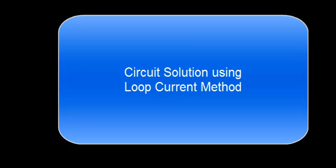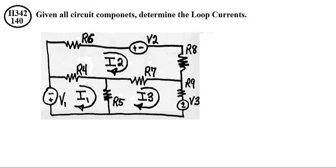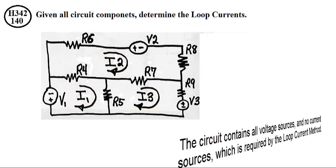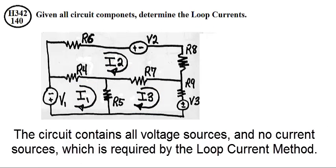Circuit solution using the loop current method. Given all these resistors and given these voltage sources, determine the loop currents. The circuit contains all voltage sources and no current sources, which is required by the loop current method.